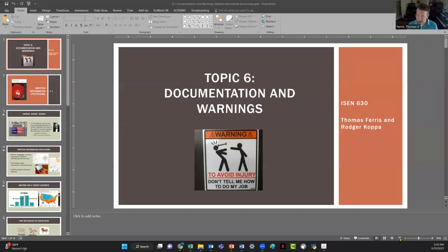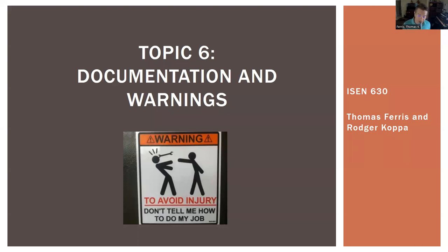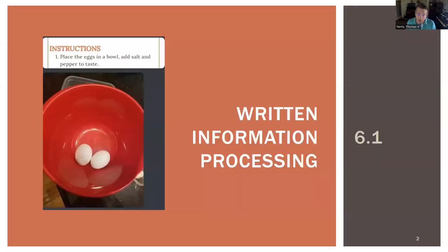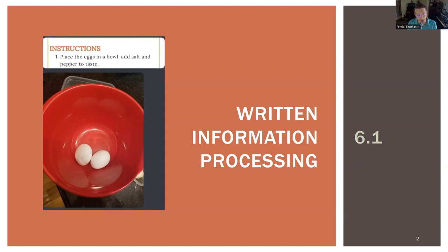Okay, we have a new topic here — Topic 6: Documentation and Warnings. There are four parts to this topic. We're going to talk about how people read in general, how to design reading material for humans, and eventually get to the design of critical verbal and non-verbal ways of communicating important things, like hazards in the design of hazard warning displays.